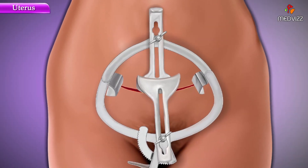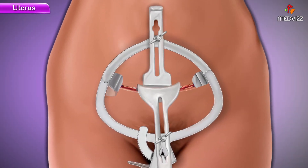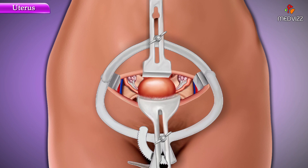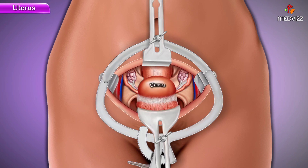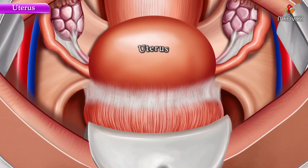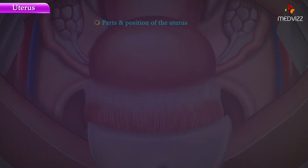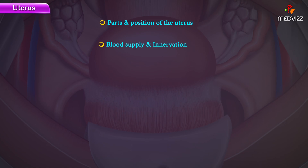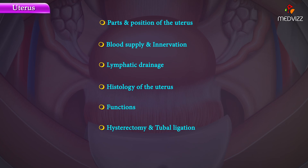The topic of discussion is detailed anatomy of the uterus. The objectives of this lecture are as follows: first we shall see the parts and position of the uterus, then we will cover blood supply and innervation, lymphatic drainage, histology of the uterus, its function, hysterectomy, tubal ligation, and finally we will conclude with a quick summary.